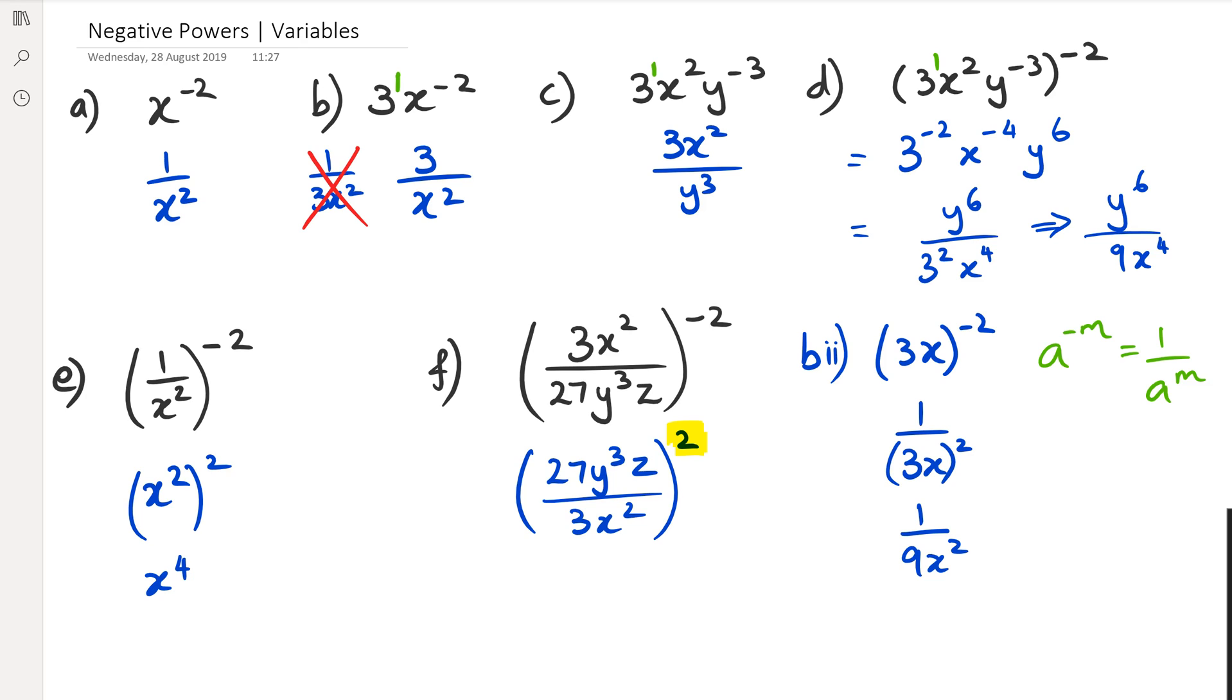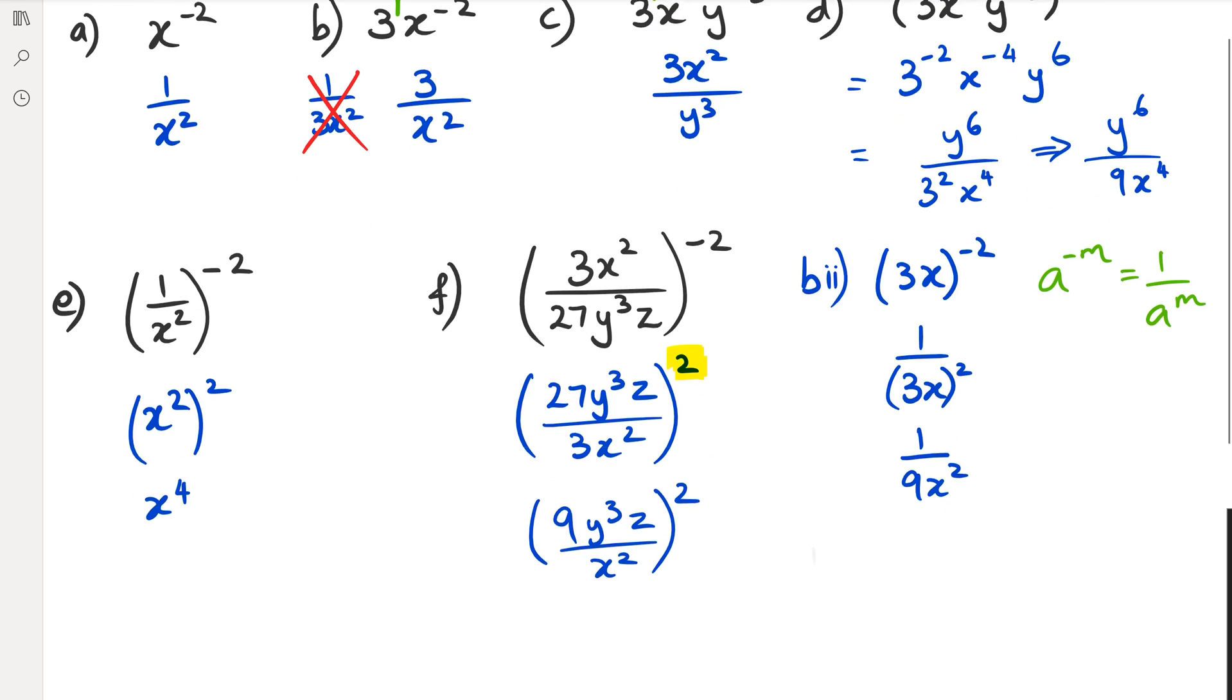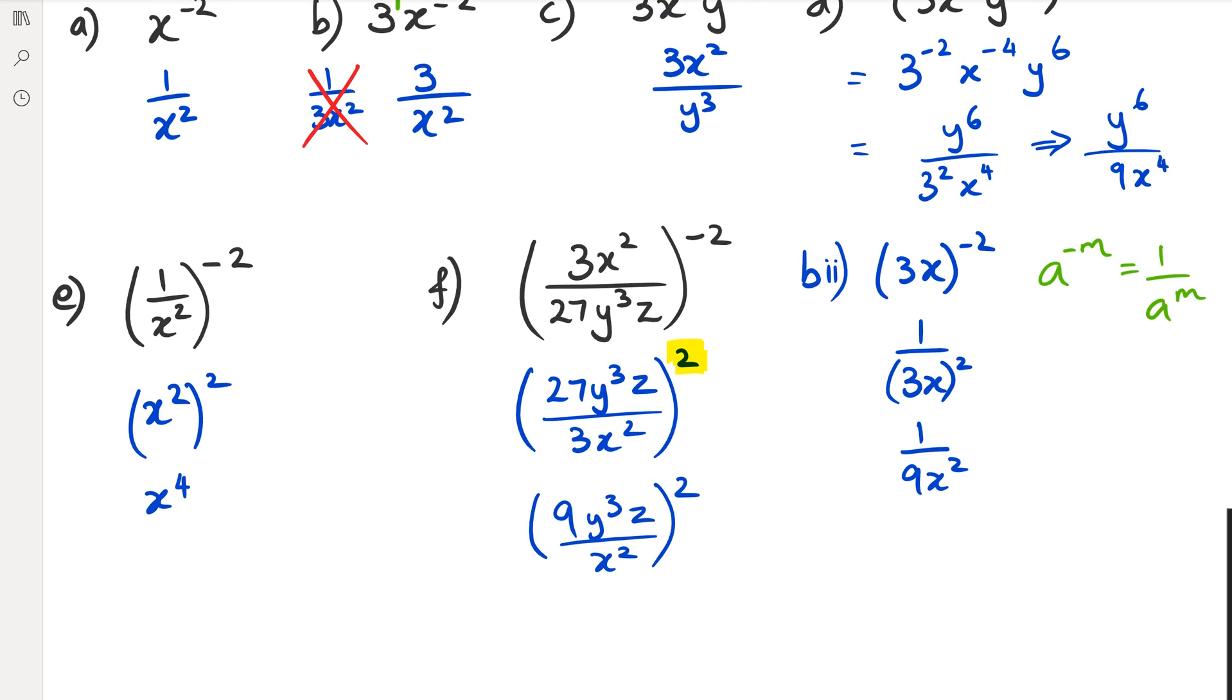From here, you can actually do this two ways. You can simplify 27 over 3 first and rewrite that as 9. So you're going to get 9y cubed z over x squared. And then that's now raised to the power of 2. So remember that z has got a power of 1, and 9 also has a power of 1. So what it ends up looking like is going to be 9 squared y to the power of 3 times 2, which is 6. And then z, 1 times 2, which equals to 2.